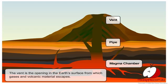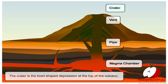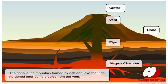The vent is the opening in the Earth's surface from which gases and volcanic material escapes. The crater is the bowl-shaped depression at the top of the volcano. The cone is the mountain formed by ash and lava that has hardened after being ejected from the vent.